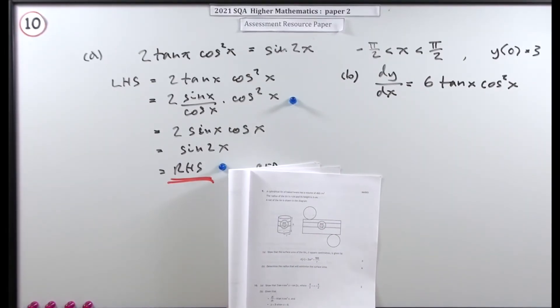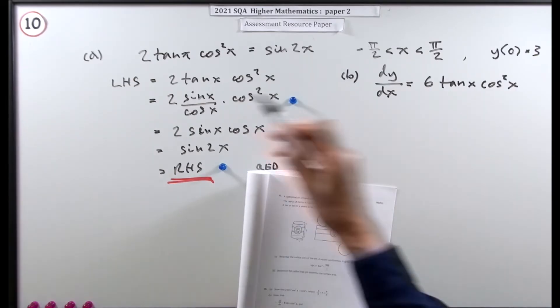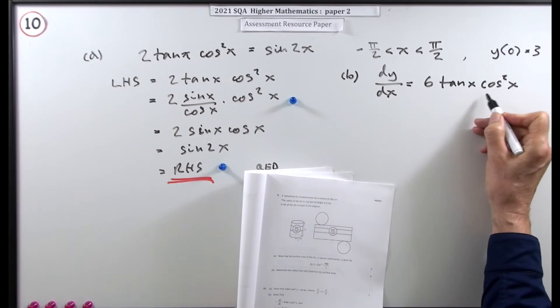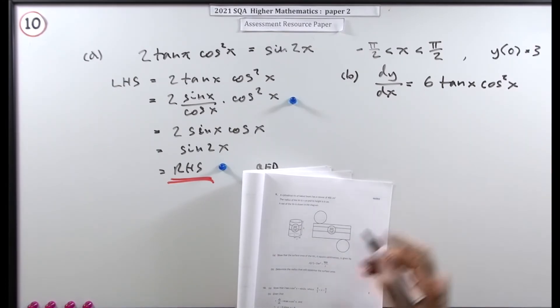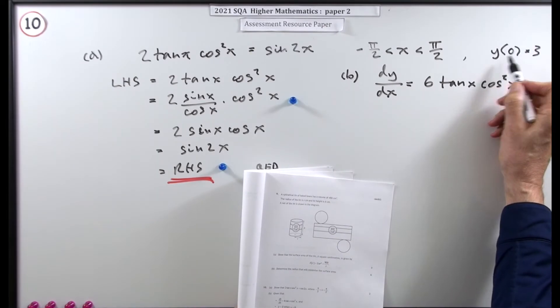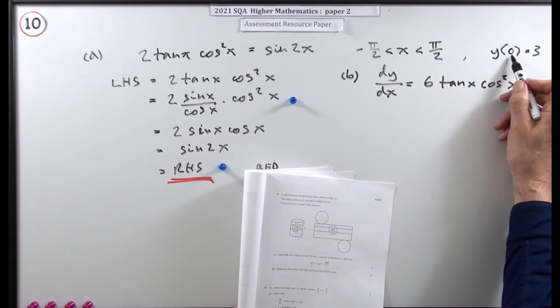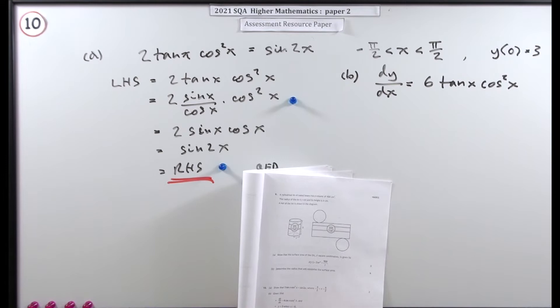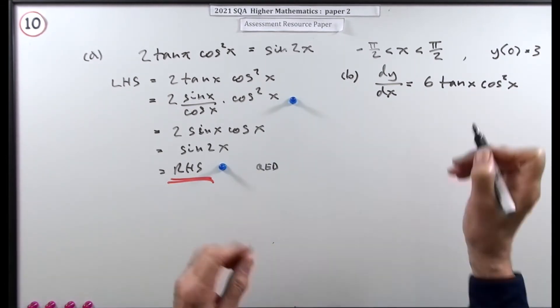Now part B. Part B says given that dy by dx equals 6 tan x cos squared x, and also y is 3 when x is 0. That's just one way of saying x is 0 and y is 3 because y is a function of x. Express y in terms of x. Well that means I want to integrate it.